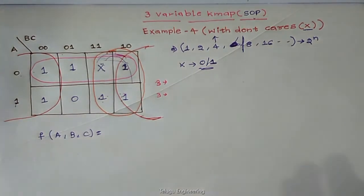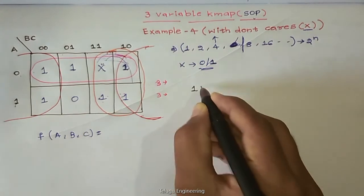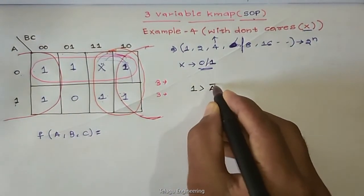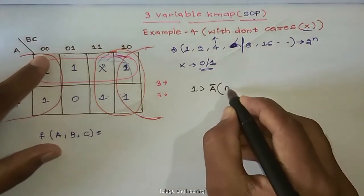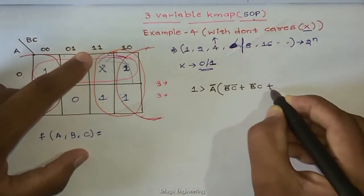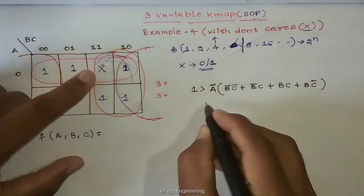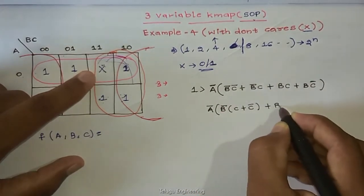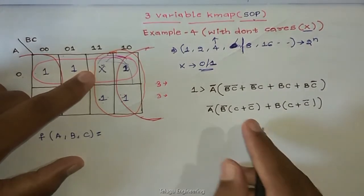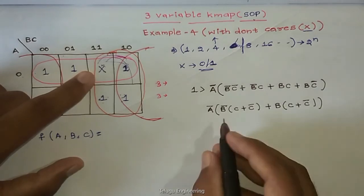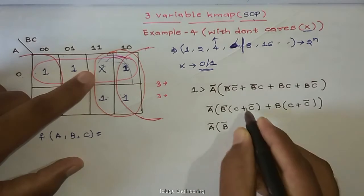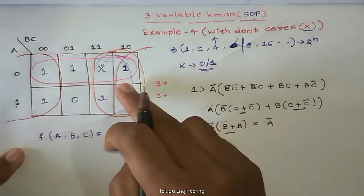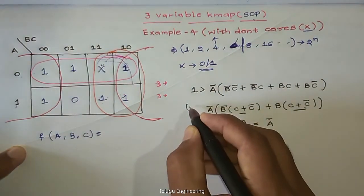Next, take the last single 1. We form groups. First group, the corners. So the function, first term: A bar into B bar C plus B bar C bar plus BC plus BC bar. That equals A bar into, taking B bar common, C plus C bar, plus B common, C plus C bar. From Boolean algebra, A plus A bar is 1. So A bar into B bar times 1 is A bar B bar, plus B times 1, so A bar B bar plus B.